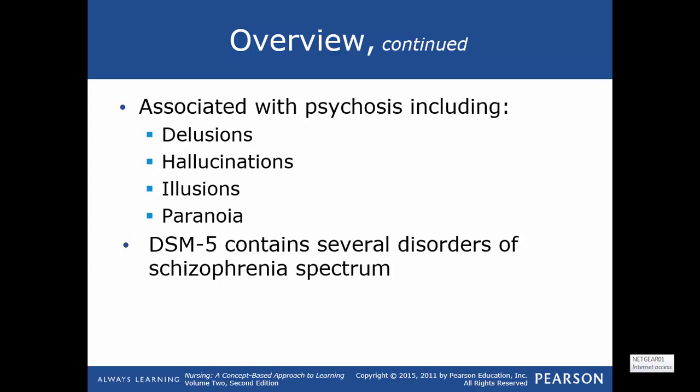The DSM-5 does contain several disorders of the schizophrenia spectrum. That's because there are several disorders that have some schizophrenic-type symptoms and processes, so they can have other things going on besides just being schizophrenic.